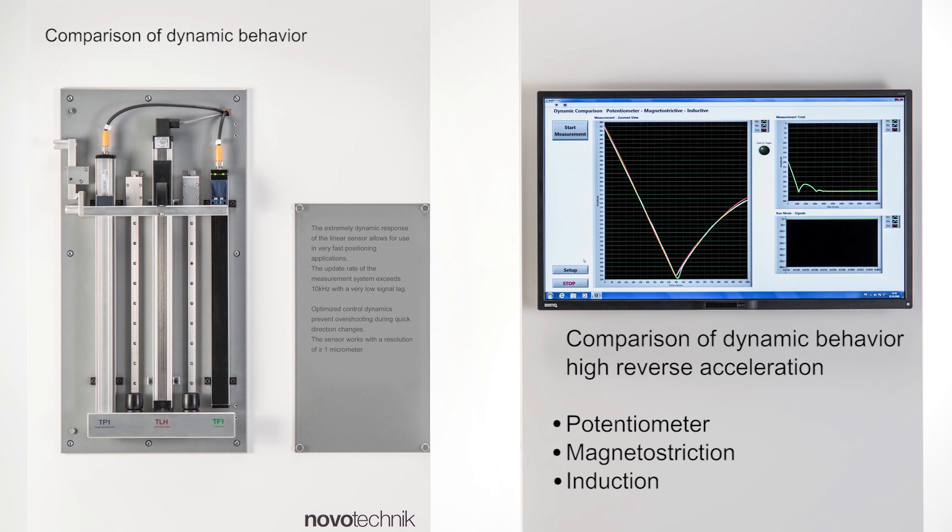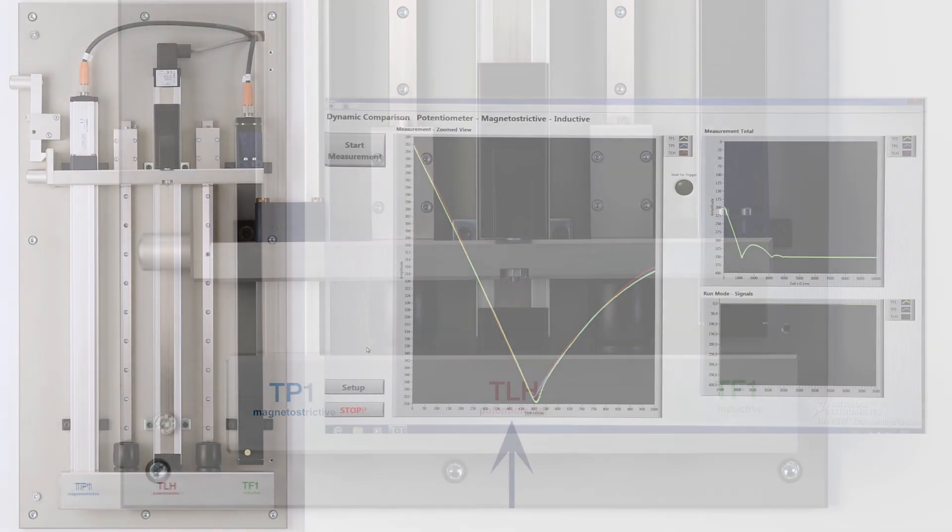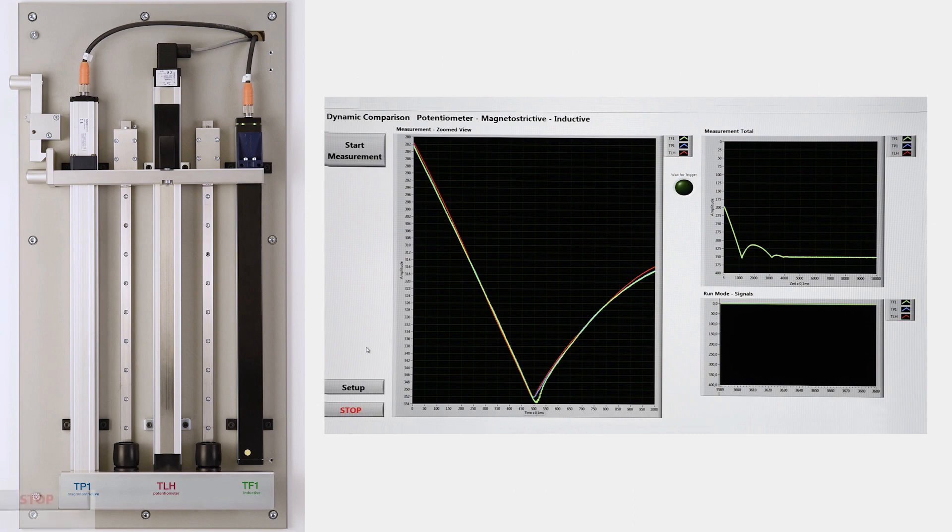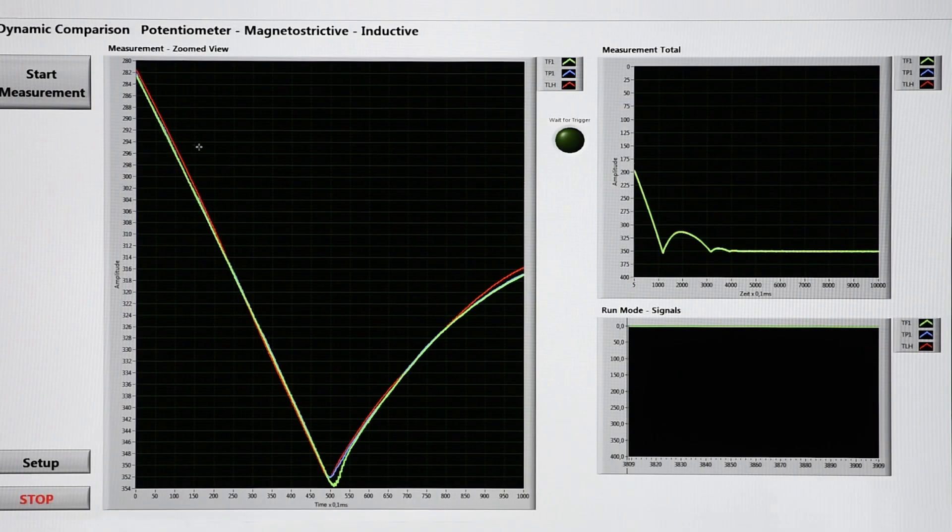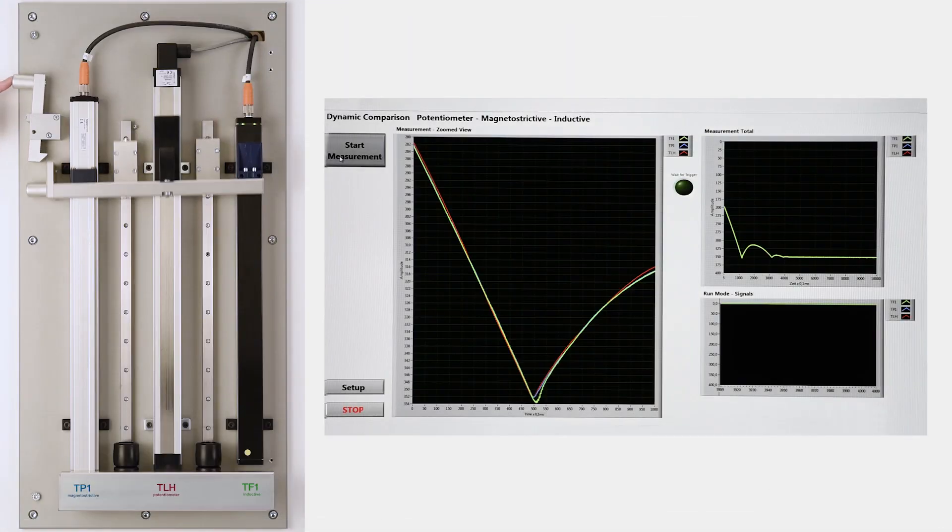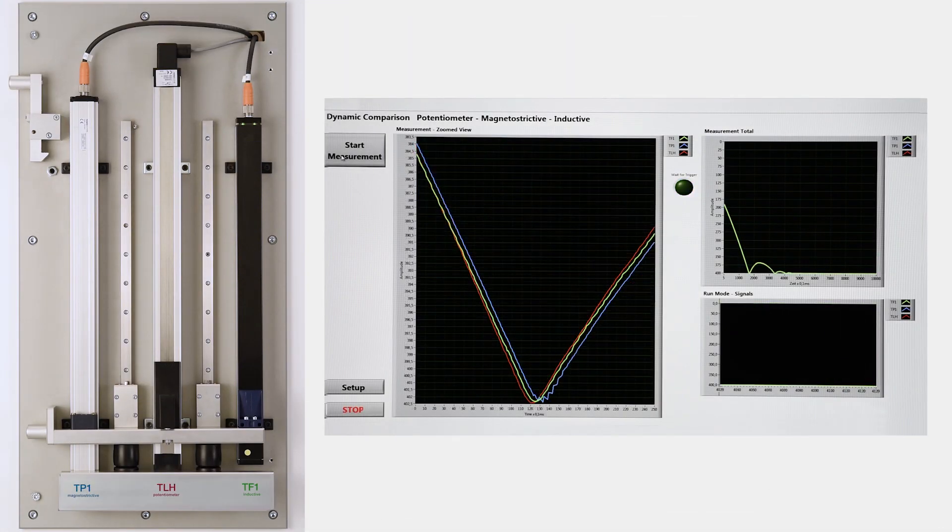The potentiometer provides real-time position measurement limited only by the bandwidth of a signal conditioning circuit. The magnetostrictive principle shows an inherent and relevant propagation delay being based on the time-of-flight principle of a mechanical wave in a wire.